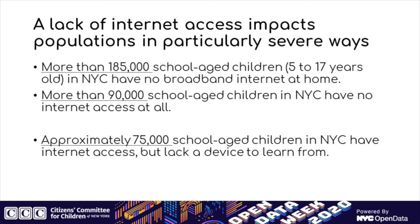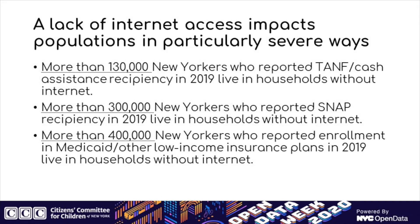Using the American Community Survey, we can also examine characteristics of people in homes without internet, particularly those eligible for safety net programs. In 2019, more than 100,000 people in households without internet also received Temporary Aid for Needy Families (TANF) cash assistance. More than 300,000 New Yorkers lived without internet and also received SNAP food stamps. More than 400,000 New Yorkers without internet were enrolled in Medicaid or another low-income plan. This means populations most in need of anti-poverty supports may face greater difficulty accessing services due to the digital divide.